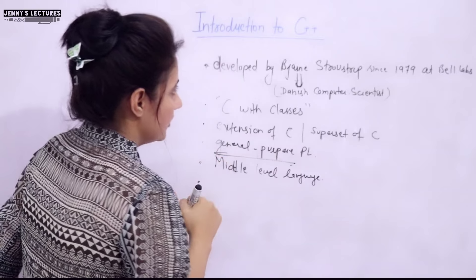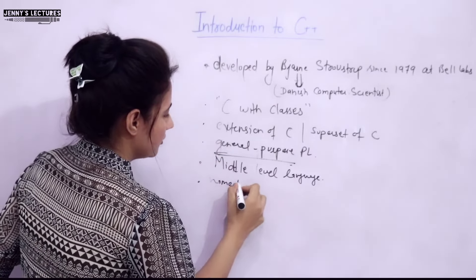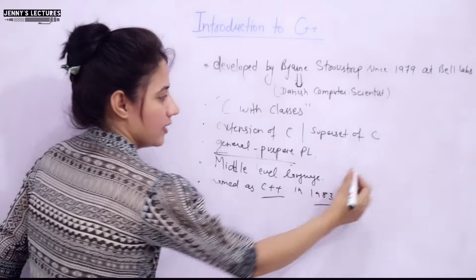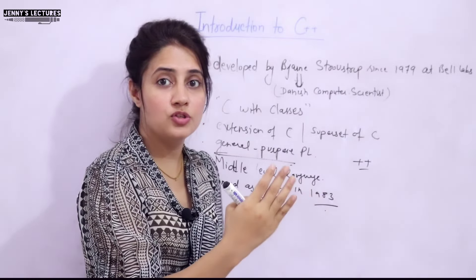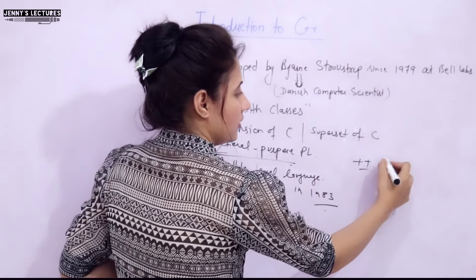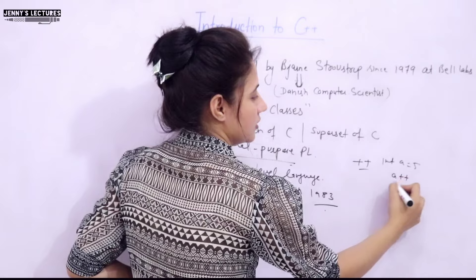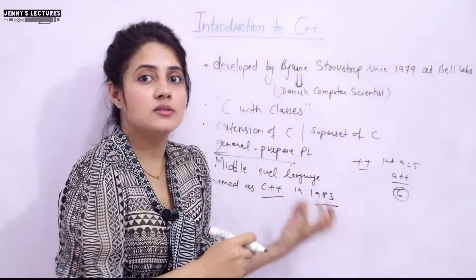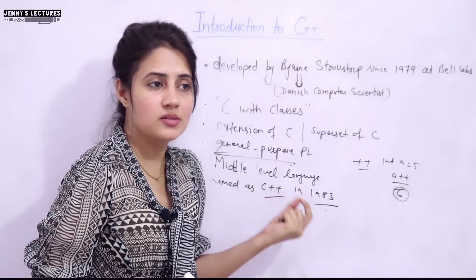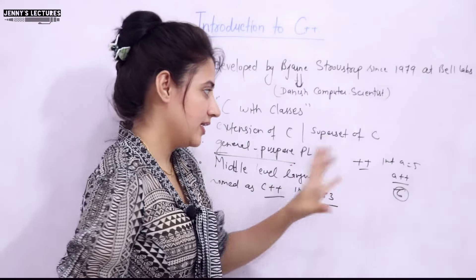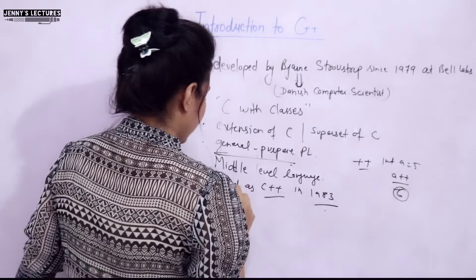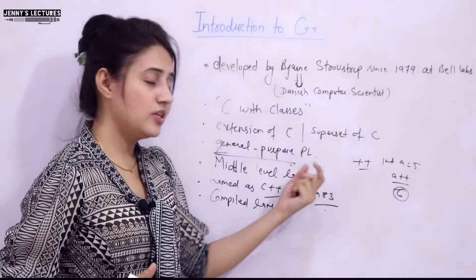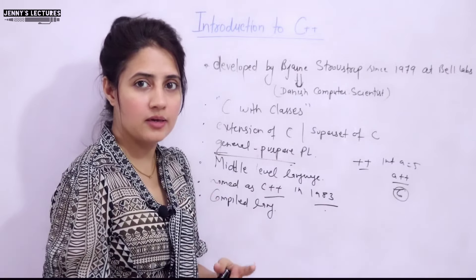C++ was named 'C plus plus' in 1983. The name comes from the increment operator '++' in C — just as '++' adds one to a value (e.g., a = 5 becomes 6), C++ adds extra features to C. It is also a compiled language, meaning a compiler converts the entire C++ code at once into machine code — not an interpreter.